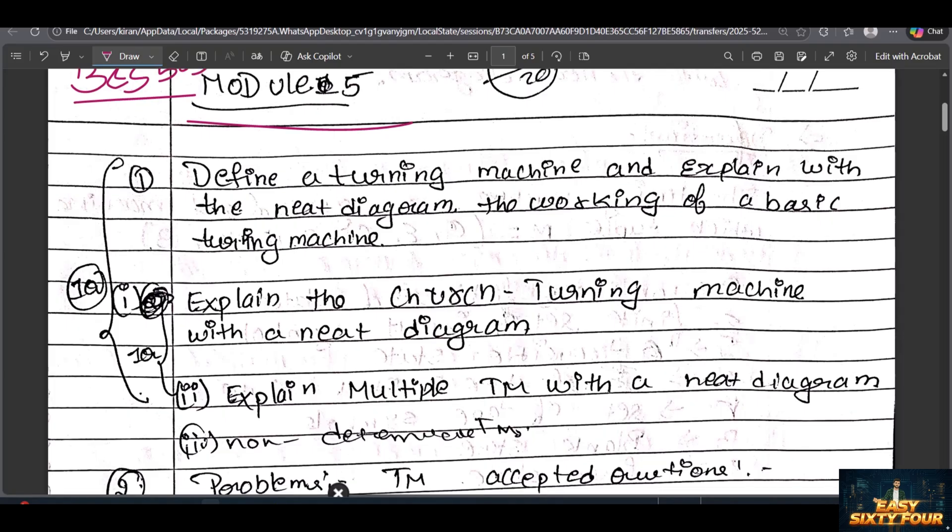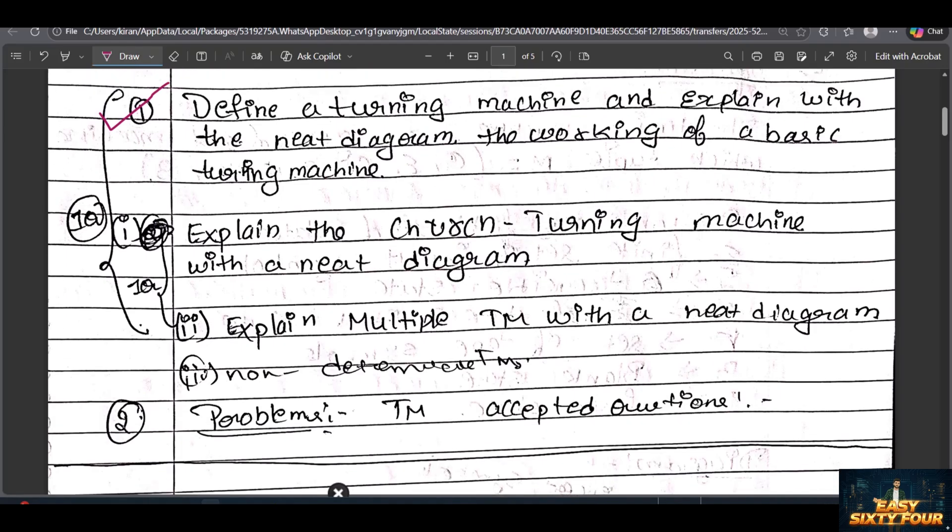Define the Turing machine and explain with a neat diagram the working of a basic Turing machine. This is the easiest question and a fixed question for Model 5. I've seen the model question papers and makeup exam papers - without this question there is no model. These are the most important questions. Whether you want to pass or get a high score, please read this question. If you only want to just pass, this question will come or may come 50-50 percent. This question is going to be 100 percent.